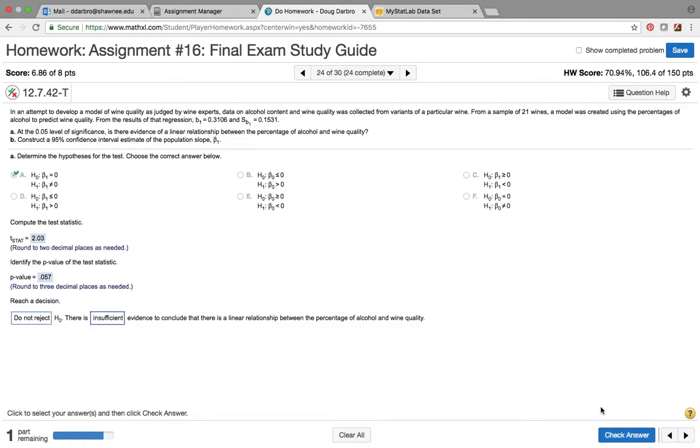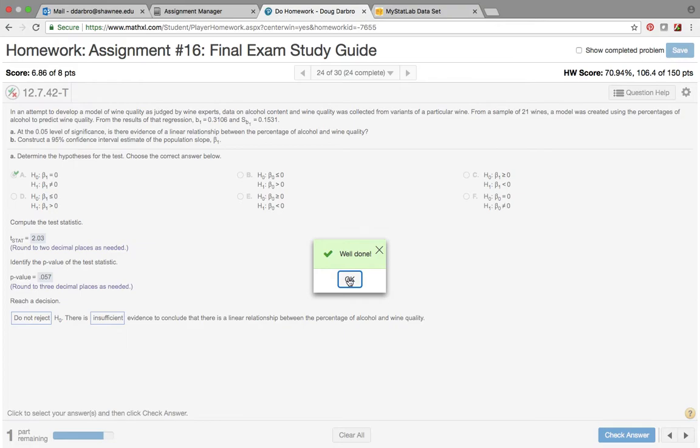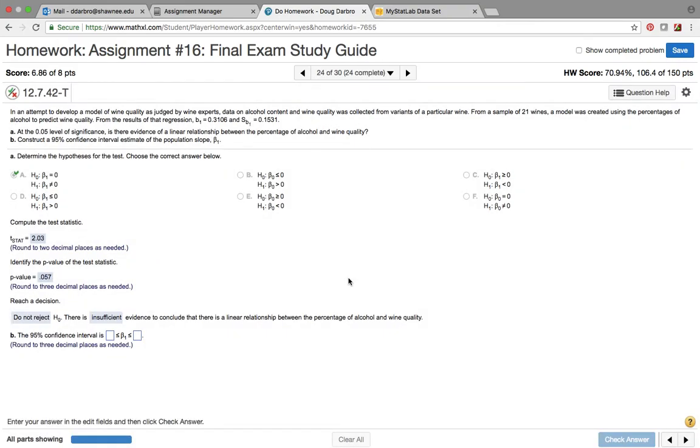So there is insufficient evidence to conclude a linear relationship. Now we want a 95% confidence interval, and I want to write down the information from this problem and I'm going to show you how we work this out.